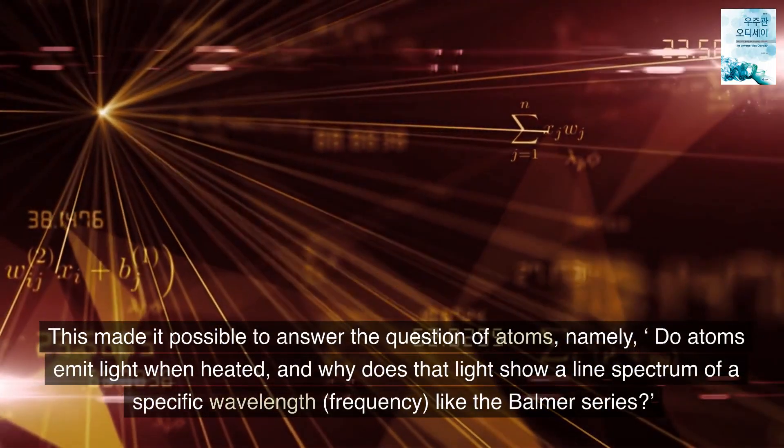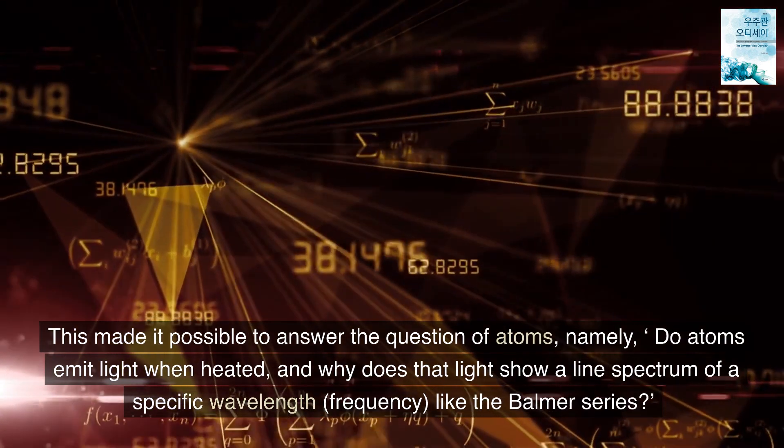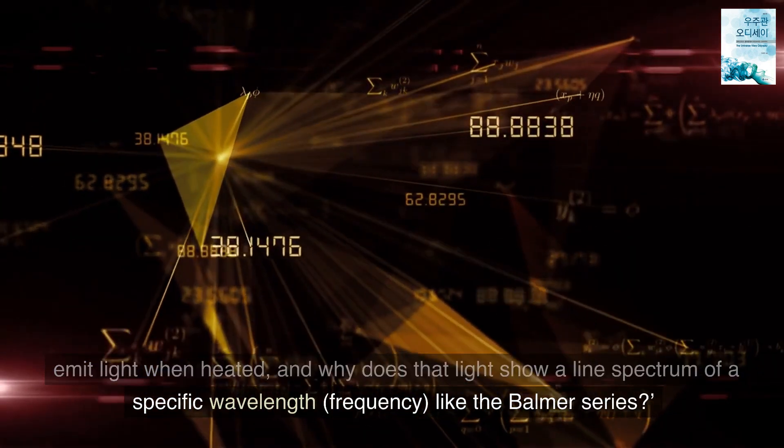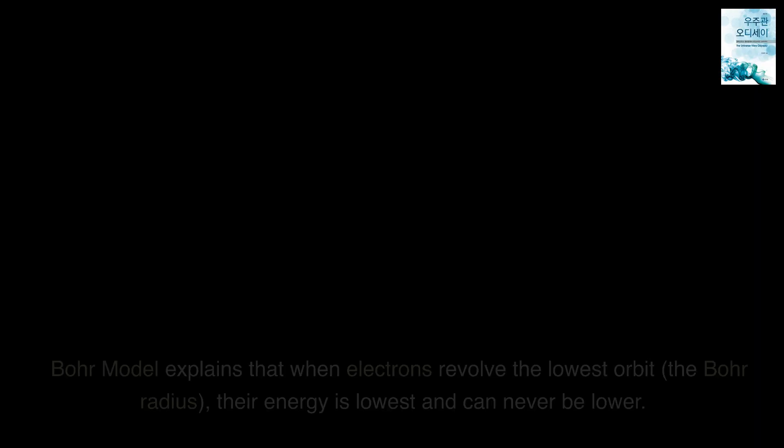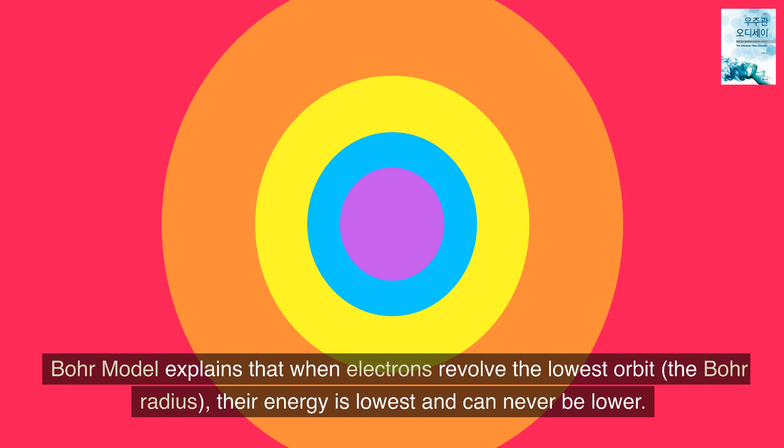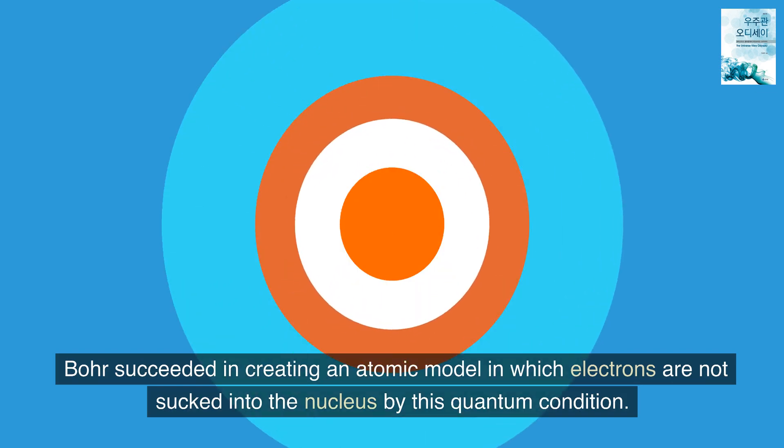This made it possible to answer the question of atoms, namely, do atoms emit light when heated? And why does that light show a line spectrum of a specific wavelength, frequency, like the Balmer series? Bohr model explains that when electrons revolve the lowest orbit, the Bohr radius, their energy is lowest and can never be lower. Bohr succeeded in creating an atomic model in which electrons are not sucked into the nucleus by this quantum condition.